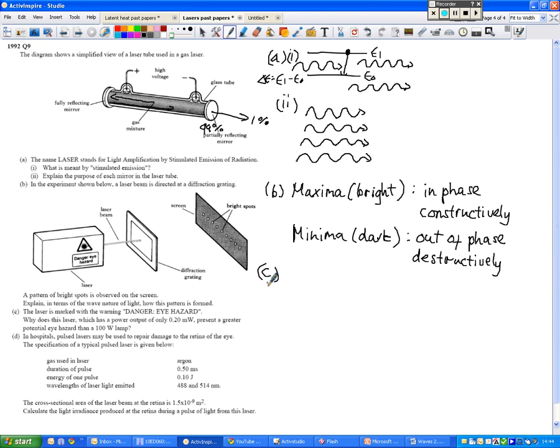The laser is marked with the warning danger eye hazard. Why does this laser, which has a power output of only 0.2 milliwatts, present a greater potential eye hazard than a 100 watt lamp? Well, that's going back to what we were talking about yesterday. The irradiance of the light, which basically tells you how powerful it is, is really due to two things. It's due to the power rating of the laser, or the power rating of the light, and the area over which it's subjected to.